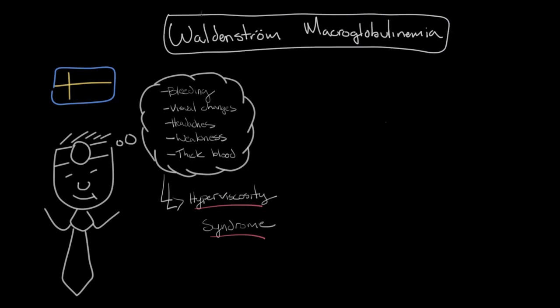So now that we know what Waldenstrom macroglobulinemia looks like, what exactly is it? Well, it's a disease that occurs in the bone marrow. So let's draw in a bone here. And the bone marrow is the center portion of the bone, and it's where blood cells are produced.